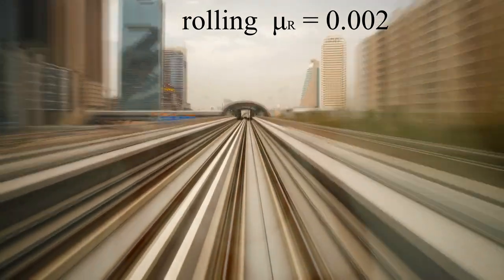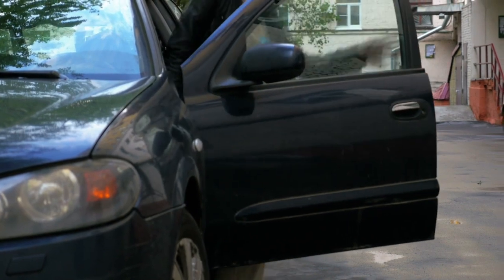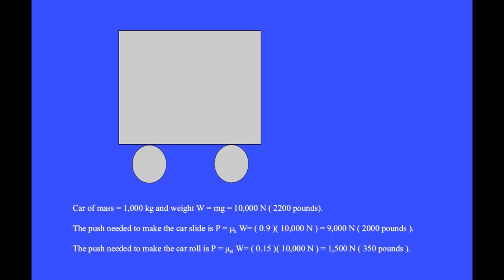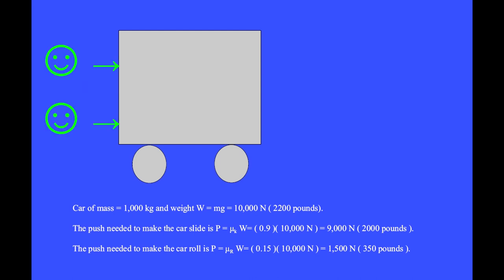How much force is needed to push a car? For a car of mass 1,000 kilograms and weight W equals mg equals 10,000 newtons (2,200 pounds), the push needed to make the car slide is P equals the coefficient of kinetic friction times weight equals 9,000 newtons (2,000 pounds). The push needed to make the car roll is P equals the coefficient of rolling friction times weight equals 1,500 newtons (350 pounds) — it takes a couple of persons to push a car with enough force to get it rolling.